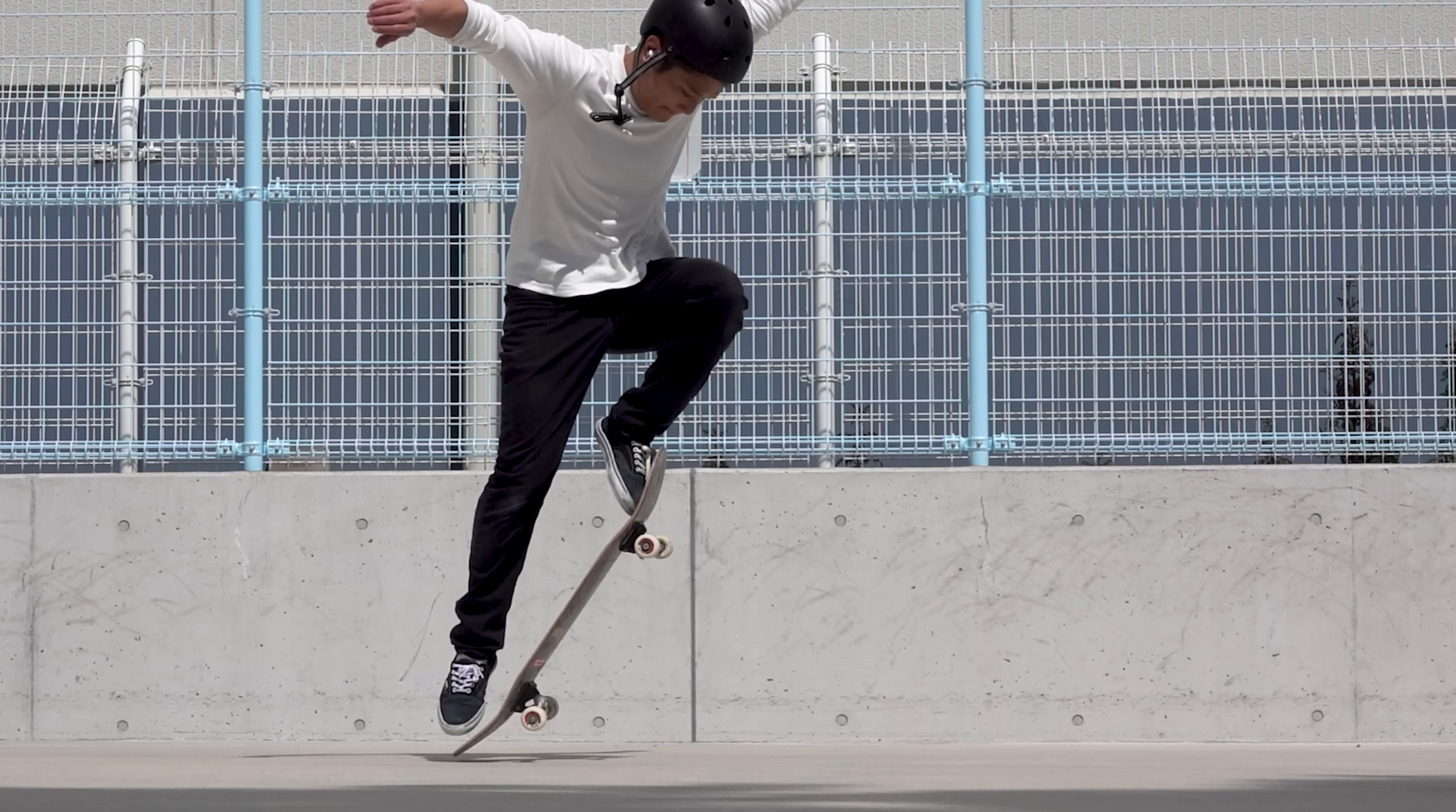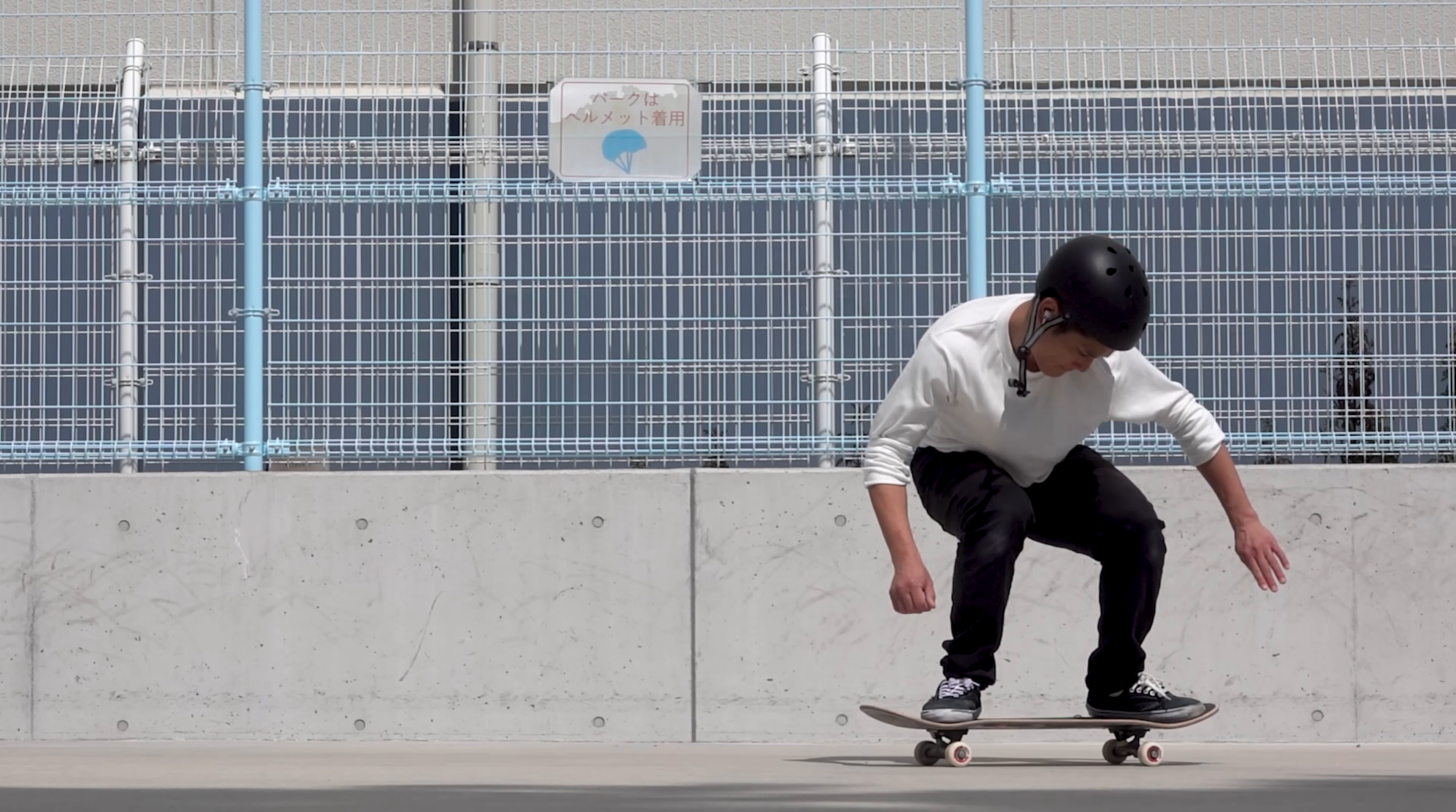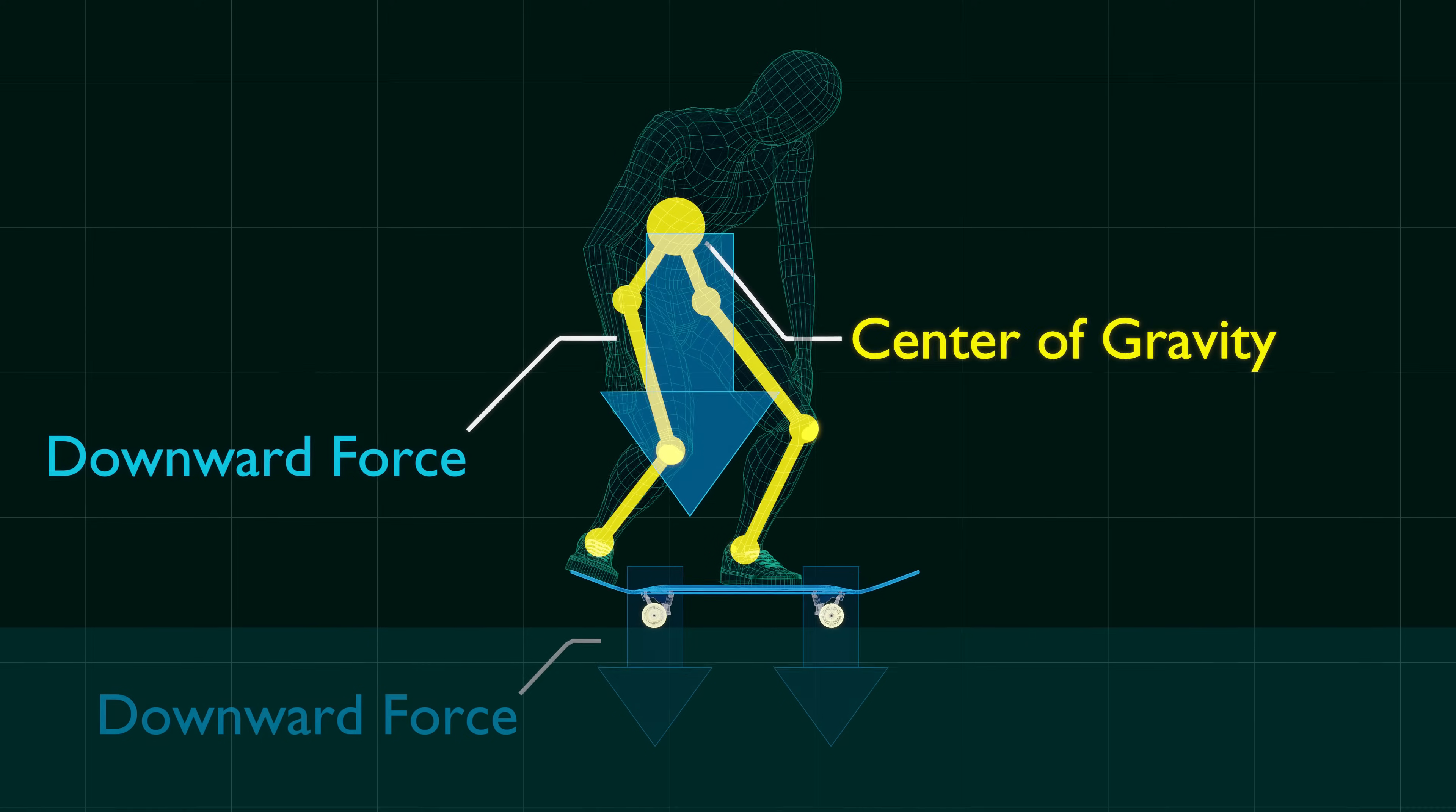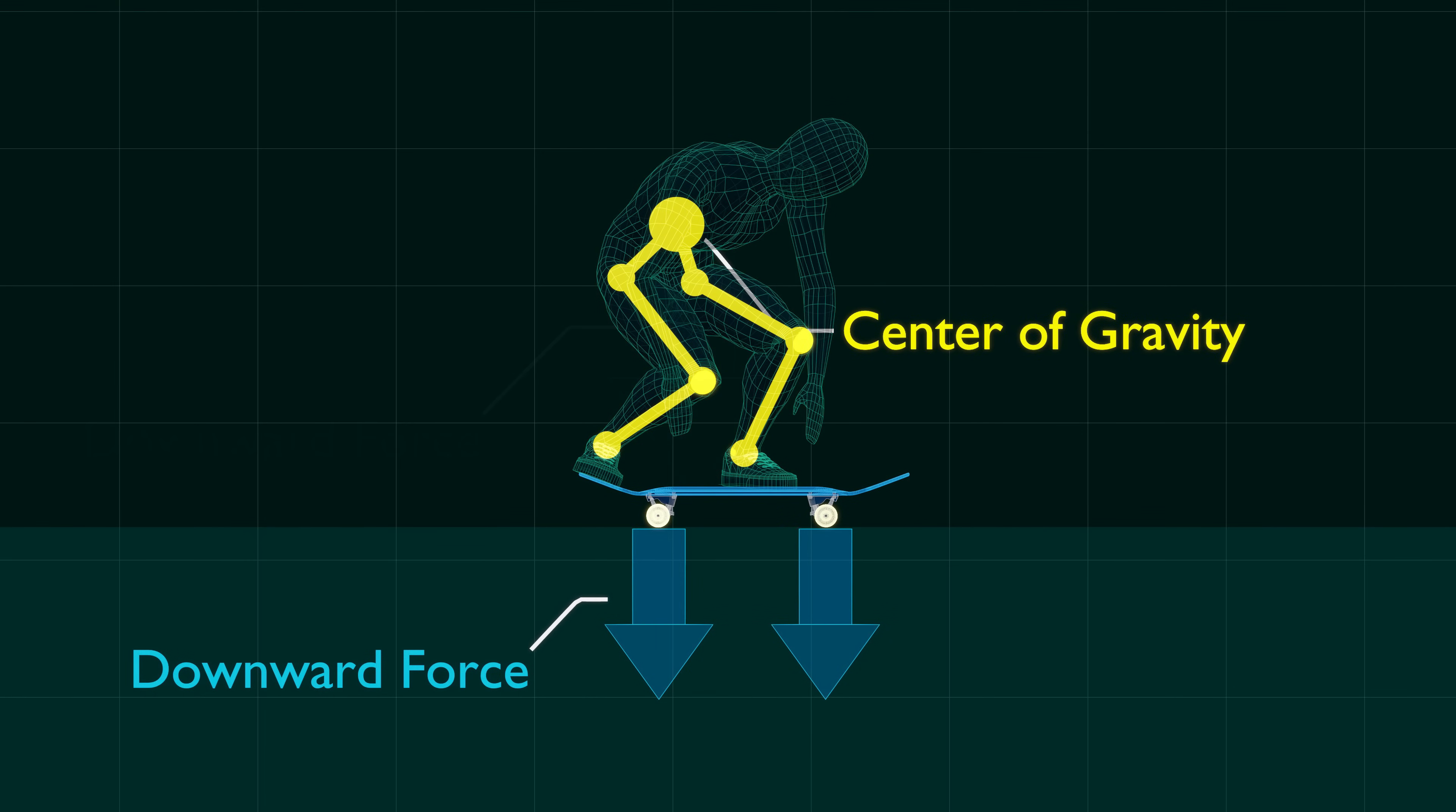Does it really happen in an ollie? Let's examine how the weight is transferred during the trek. As you squat down from a standing position, the force of the downward acceleration generated by the body is distributed almost evenly between the front and rear wheels.